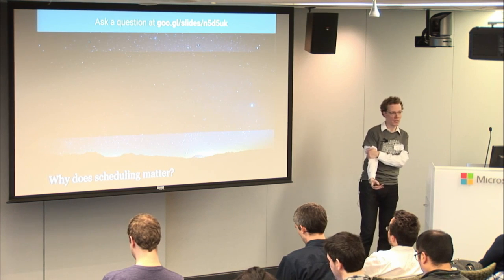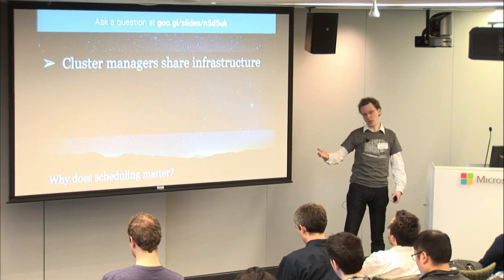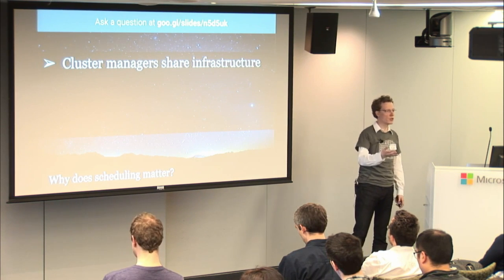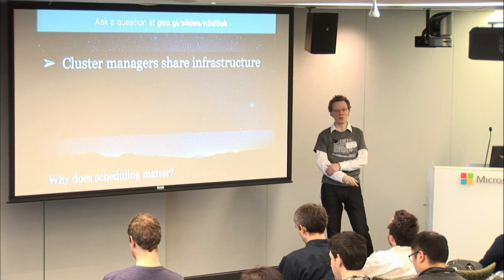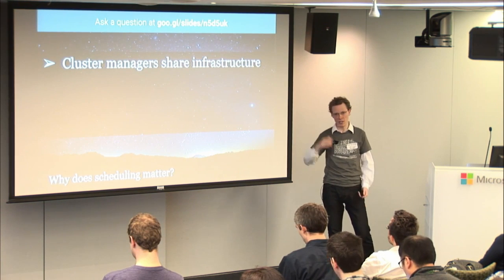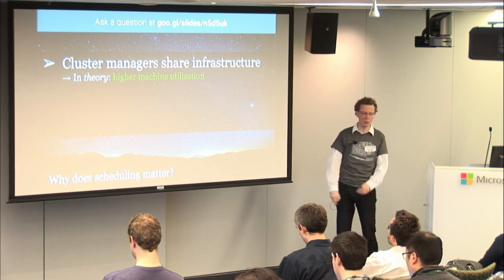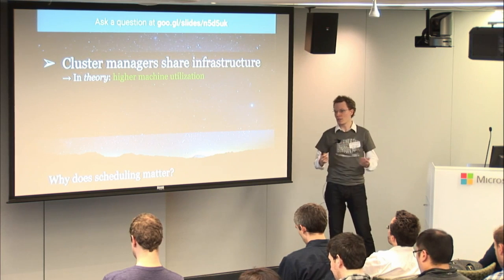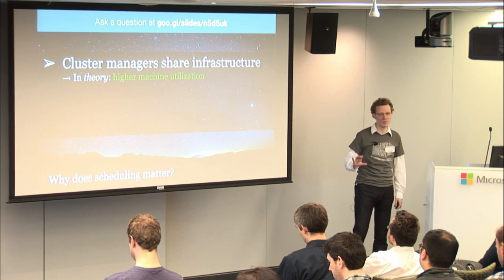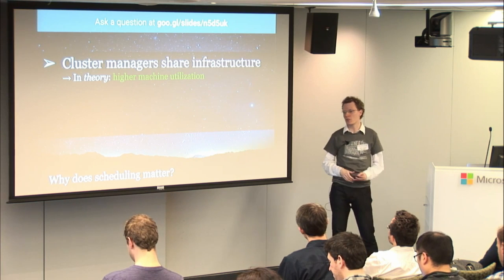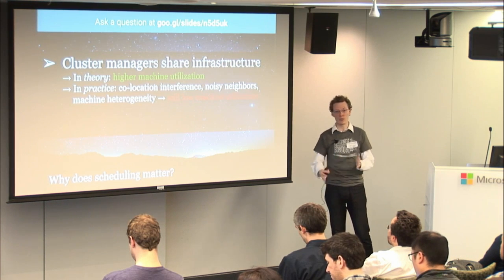So why does scheduling matter? It's the key to high utilization. You want to share your infrastructure. If you just dedicate a machine to your database, a machine to your batch processing, a machine to various other things, you're going to probably underutilize the machines. This is the same story as VM consolidation back in the 2000s all over again. In theory, by just packing your machines tightly, you get super high utilization, save on CapEx — you don't have to buy new machines — and save on OpEx. But in practice, there are lots of things that happen which mean that this promise does not quite come true.